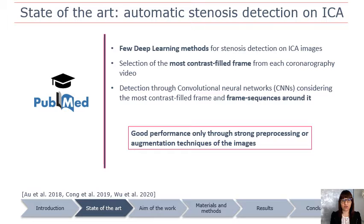Mainly, existing methods select from coronary angiography videos the most contrast-filled frame, considered the one with the best quality and with the greatest anatomical significance for stenosis. Then, they perform detection through convolutional neural networks using the chosen frame and some frame sequences before and after the selected one.